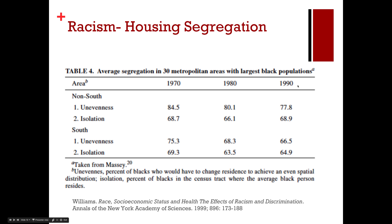This table goes up through 1990. Unevenness is the percentage of Black residents who would have to change residences to achieve an even spatial distribution. Isolation is the percent of Black residents in a census tract where the average Black person resides. The higher the numbers, the more segregation there is. This side is the non-South and this side is the South.